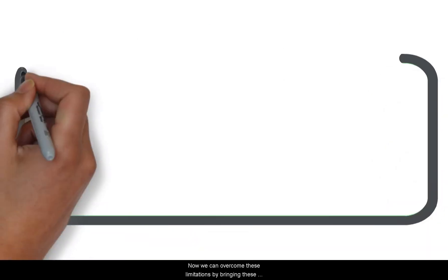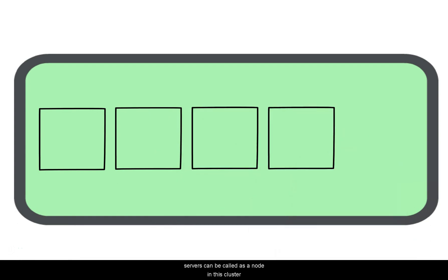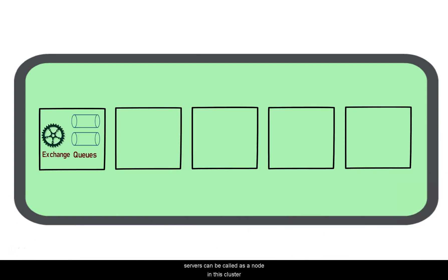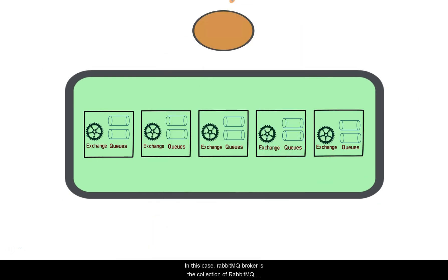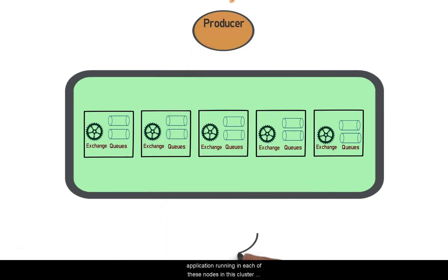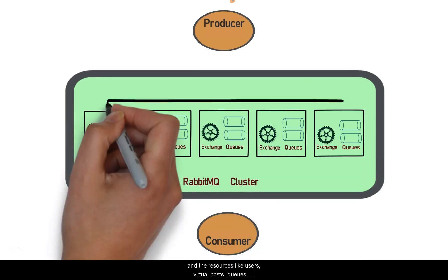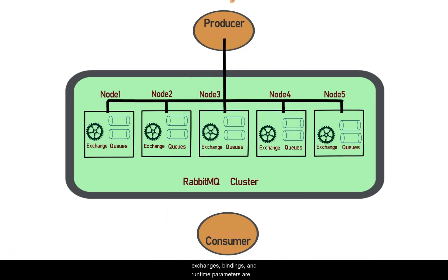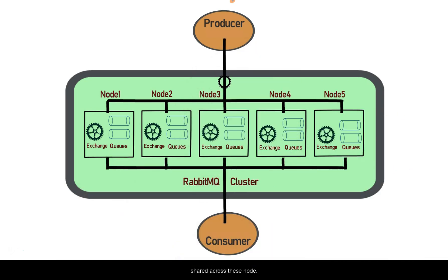Now we can overcome these limitations by bringing these servers together as a single cluster, and each of these servers can be called as a node of this cluster. In this case, the RabbitMQ broker is the collection of RabbitMQ application running in each of these nodes in the cluster. Resources like users, virtual host, queues, exchange, bindings and runtime parameters are shared across these nodes.